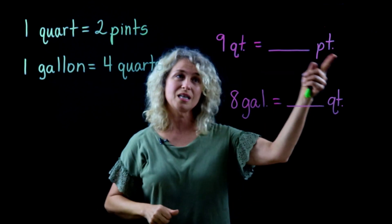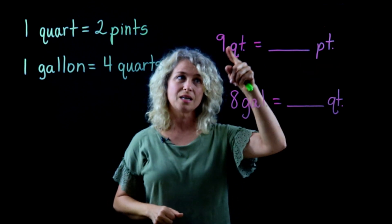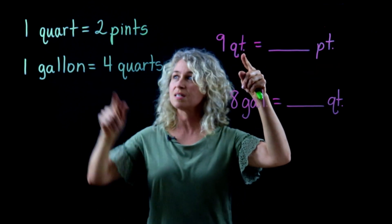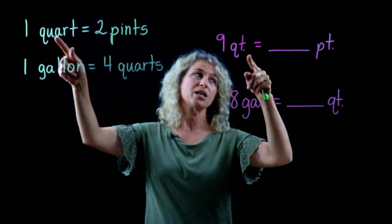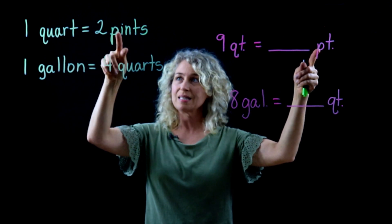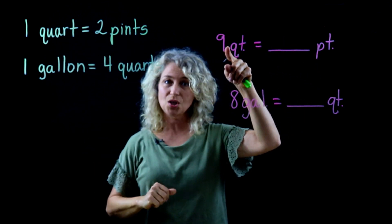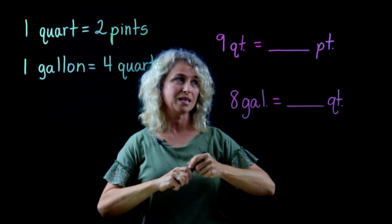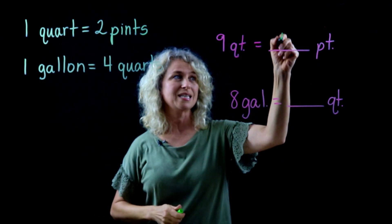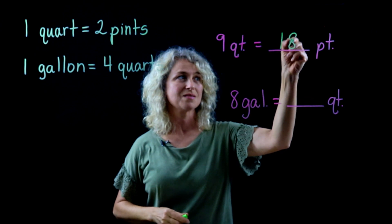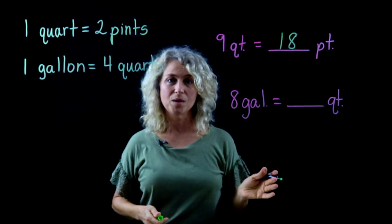The first one's an easy one — 9 quarts and we're changing it to pints. So it's just 9 times 2. 9 times 2 is 18. So that's a simple one.